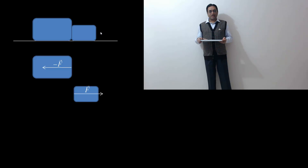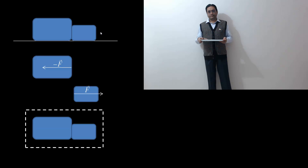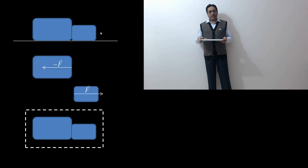Let us now go for the system as a whole approach. Now we take two bodies jointly as our system. In this case, vector F and minus F vector both are acting on the same system, and hence these two will cancel each other. So in this case, the two forces cancel each other.